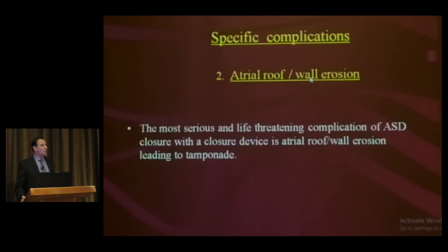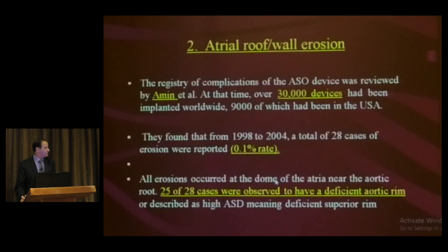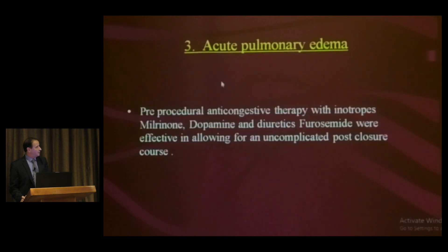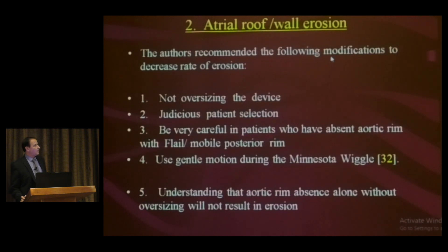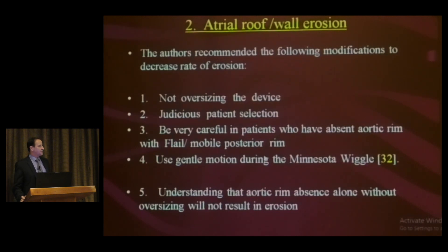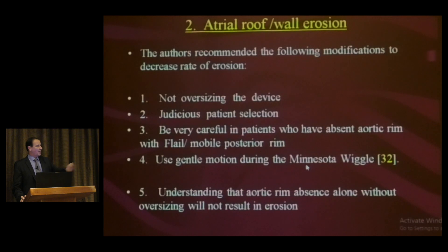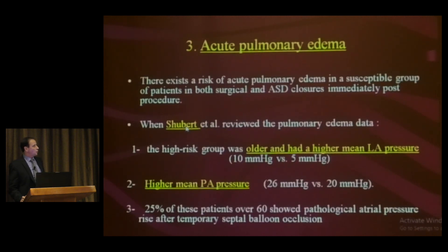The second complication is wall erosion — the most serious and life-threatening complication of device closure — which leads to cardiac tamponade. Recommendations to decrease erosion rate: do not oversize the device; be careful with absent aortic rim or floppy, mobile posterior rim; use gentle motion during the Minnesota wiggle — a forward and backward movement performed before releasing the device. An absent aortic rim alone without oversizing will not result in erosion.